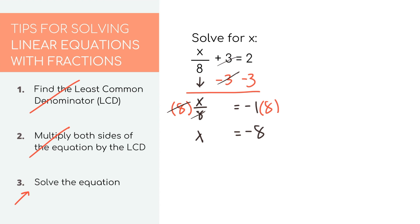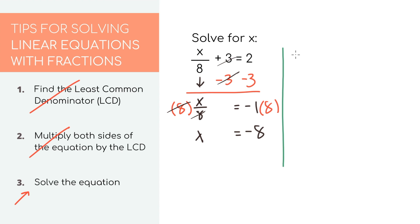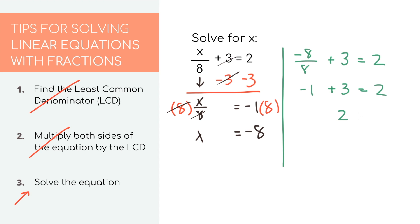For equations like this, it's always good to check your answer. So we can plug in negative eight for X in the original equation. Negative eight divided by eight plus three equals two. Negative one plus three equals two, and two equals two, so we know we have the right answer.